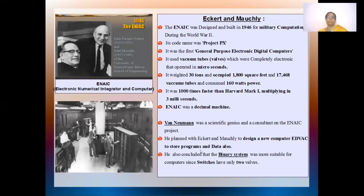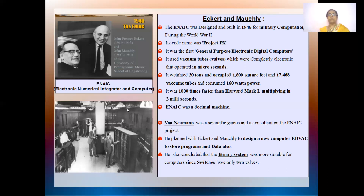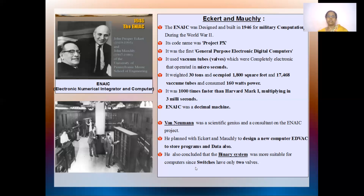This computer was able to store more programs and more data. And it was Von Neumann who concluded the binary system. As you know, when you switch on and off, it has only two ways — on or off. So he understood the system of binary, and binary was included in the working of the computer. He concluded that the binary system was most suitable for computers, since switches had only two states or two values.